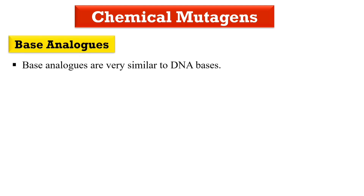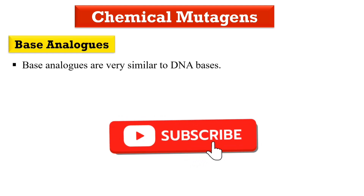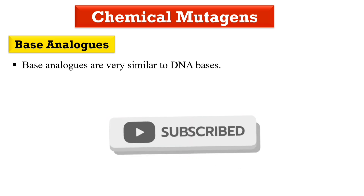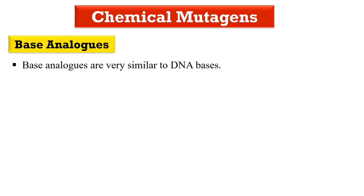Next are chemical mutagens. The first type is base analogs. The name indicates that analogs means they are similar to some bases. Base analogs are very much similar to the DNA bases, so they get incorporated into DNA instead of the original base, causing errors during replication.